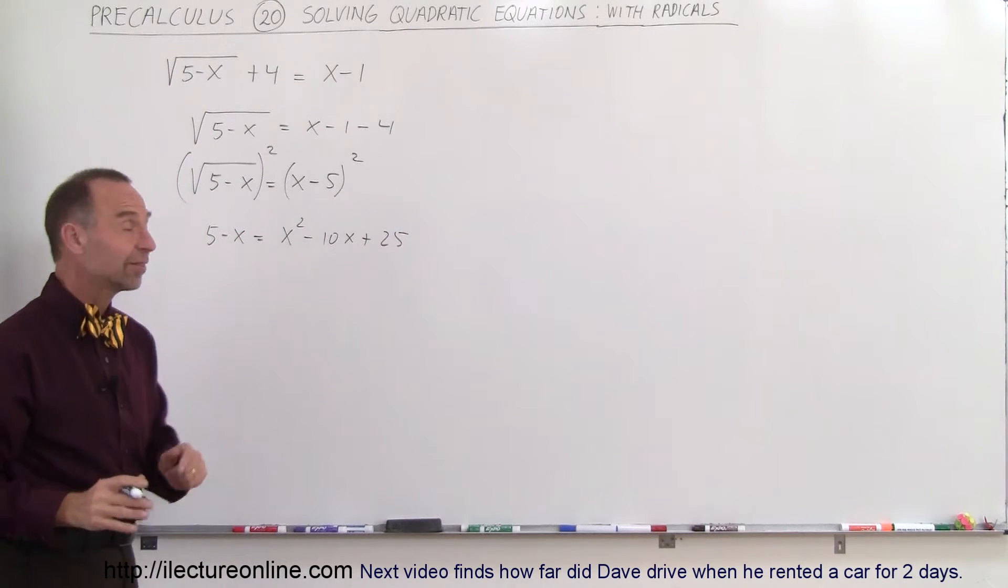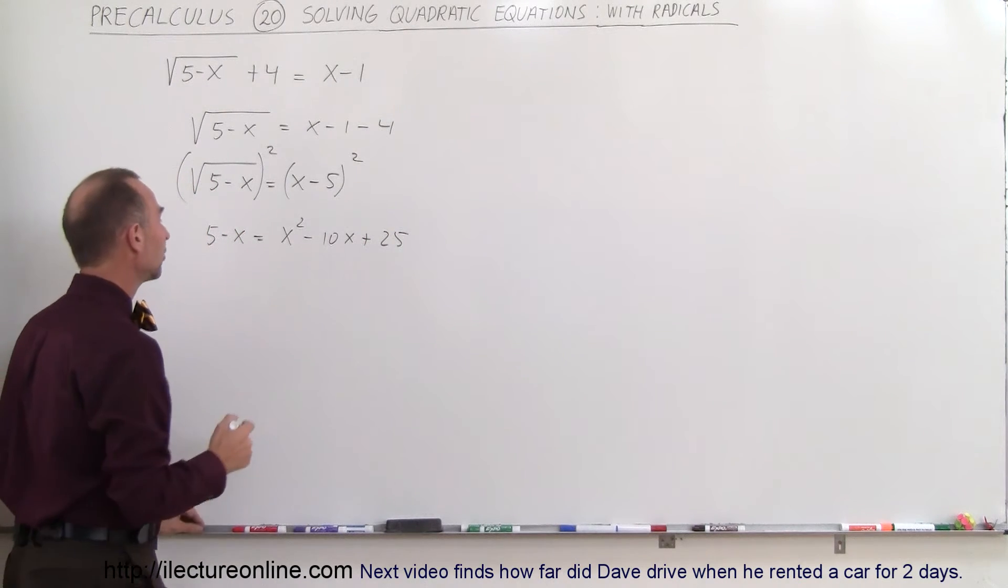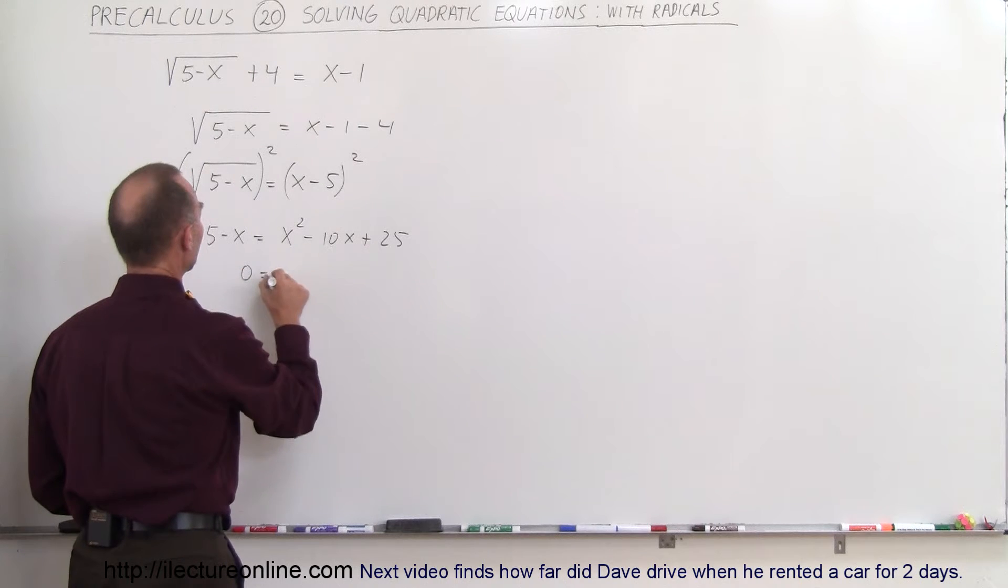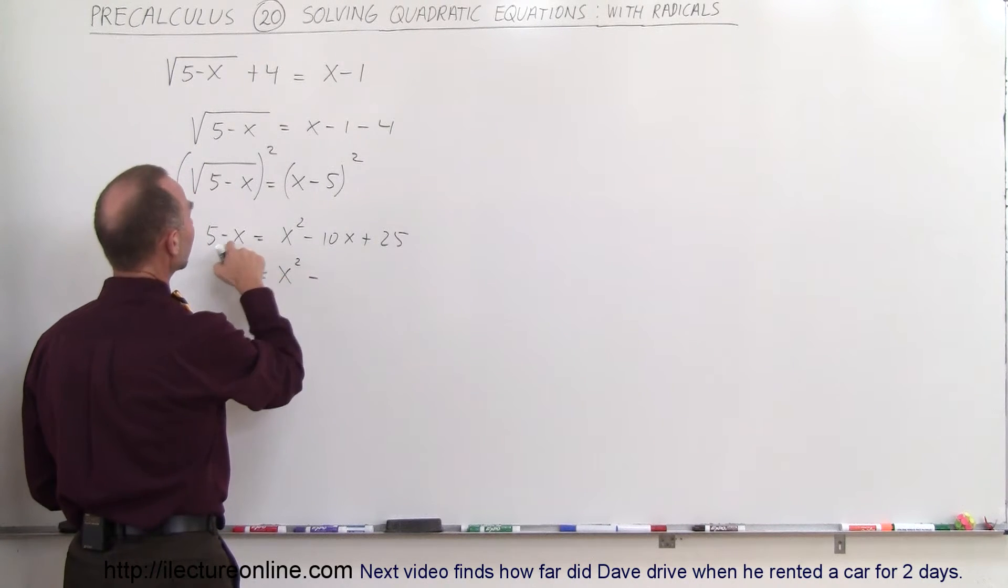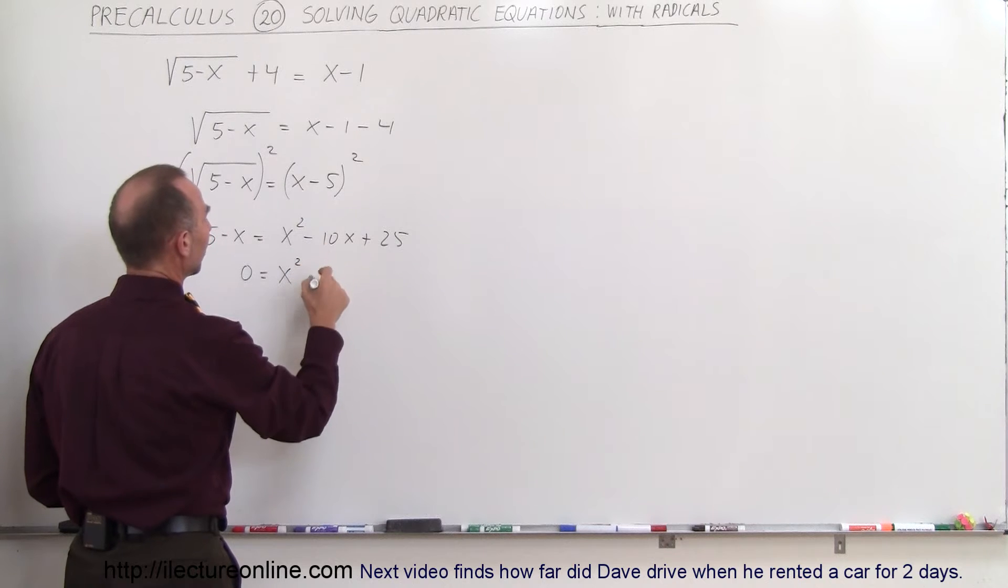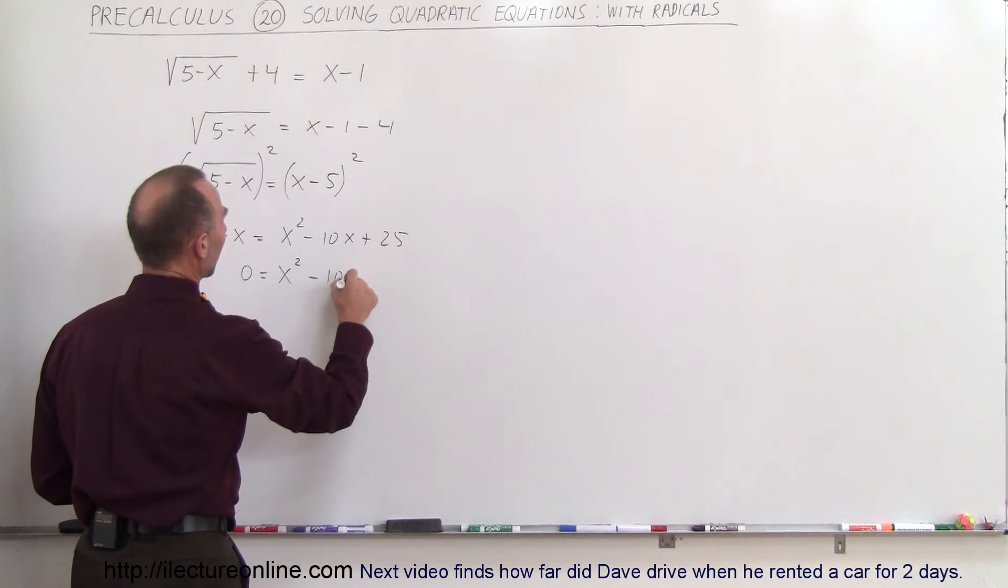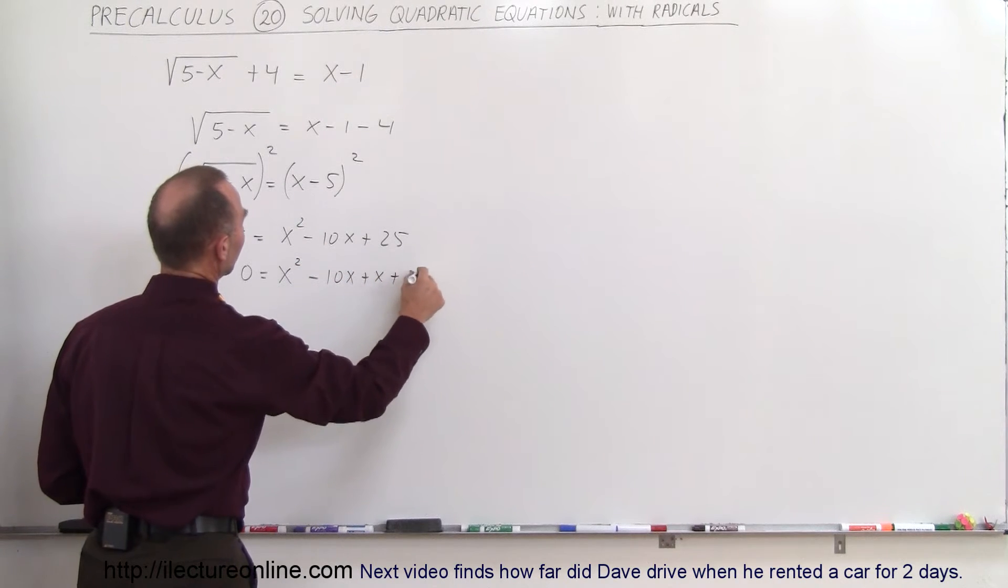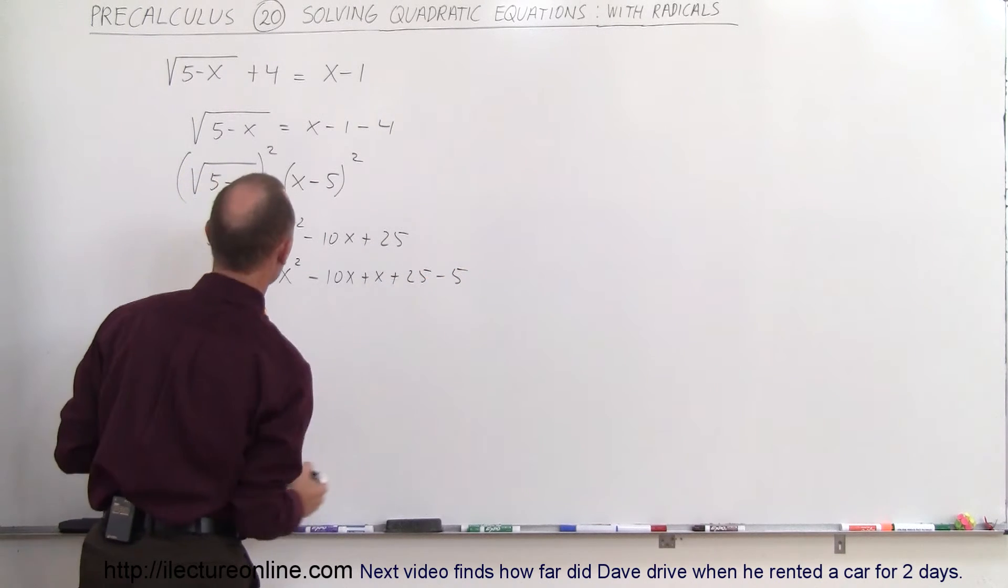Now we move everything over to one side of the equation, set it equal to 0 on the other side. So 0 is equal to x squared minus, when we bring the minus x over that becomes a plus x, so that's minus 10x plus x plus 25, and the plus 5 becomes a minus 5 on this side.